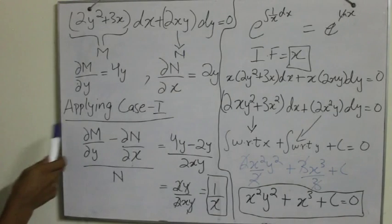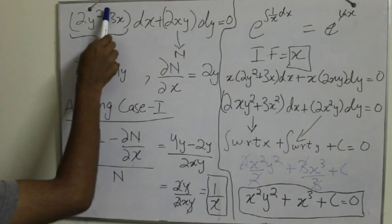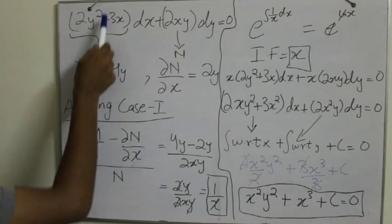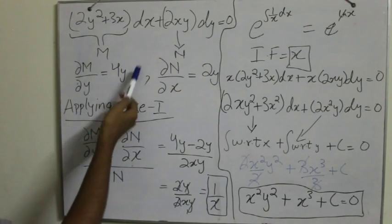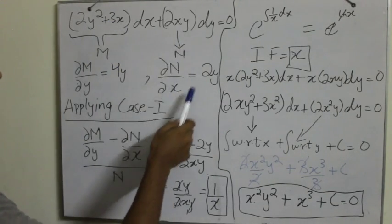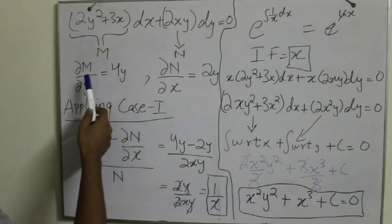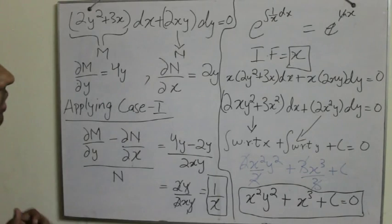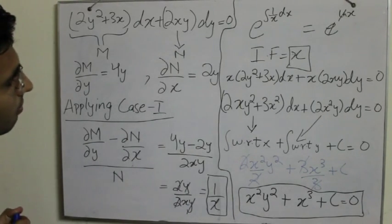So the partial derivative of M with respect to y is 4y plus, as this is the partial derivative of y, this term becomes constant and the constant derivative is 0. So 4y plus 0. And the partial derivative of N with respect to x is 2y. So as these two are not equal, these cannot be solved by the exact method.